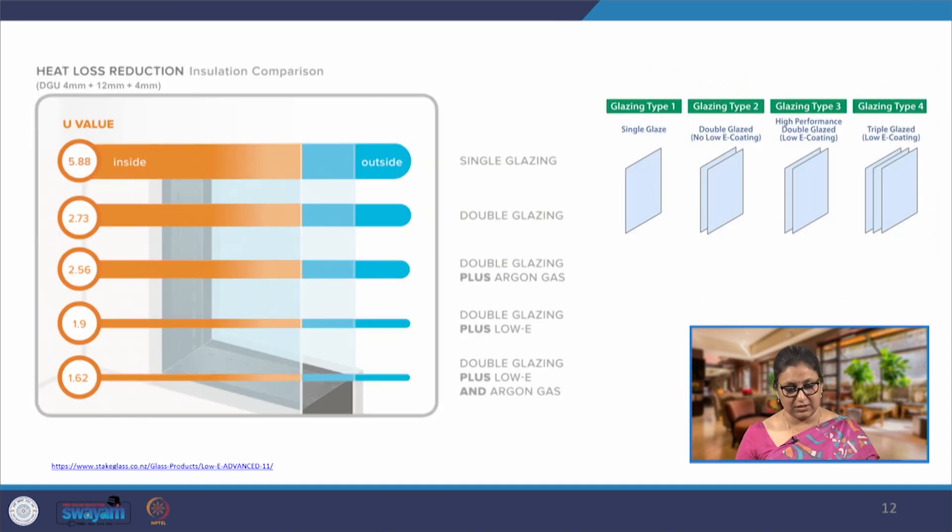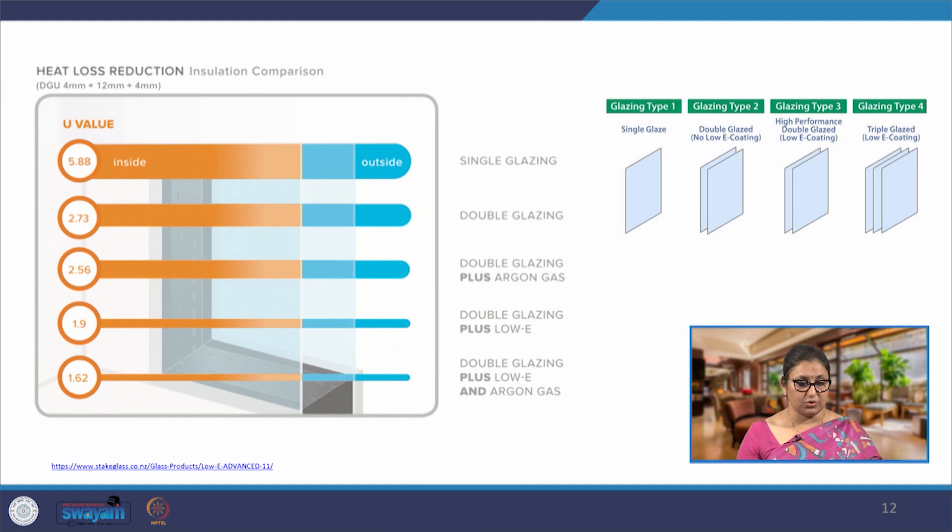How does it affect energy calculation? Assume a building - I am sitting in Roorkee right now, a composite climate for India with extreme hot summers and very cold winters. I have a building with windows on all 4 sides, uniformly distributed window wall ratio.